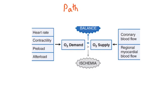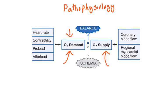Now let us see the pathophysiology of angina pectoris. Blood carries oxygen and nutrients, and every organ and tissue needs oxygen to get energy. The heart is contracting continuously day and night, so it demands a lot of energy, which is provided by oxygen delivery. There is a constant oxygen demand that must be met by an equal supply. When there is a balance between oxygen demand and supply, it is a normal homeostatic condition. But when oxygen demand is more than oxygen supply, that condition causes ischemia, which is what causes angina pectoris.